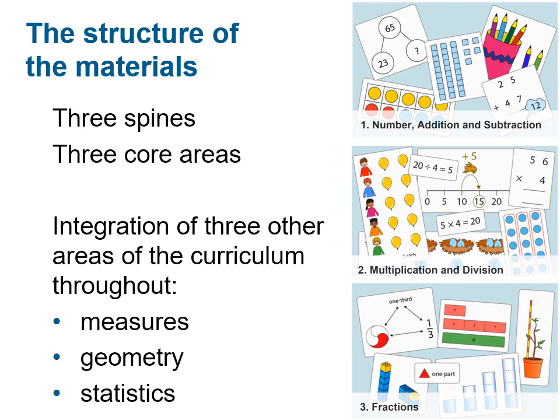The structure of the Primary PD materials: the materials consist of three spines — the number, addition and subtraction spine; the multiplication and division spine; and the fractions spine. Although these spines are not narrowly defined by their title, as they also seek to integrate the other three areas of the curriculum — measures, geometry and statistics — as ways of extending and exemplifying these core concepts.